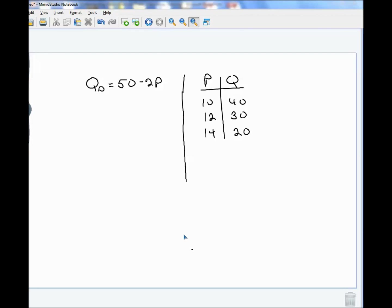So, given this demand equation, suppose you are asked to calculate arc elasticity where P is 10 and P is 15. So the formula for arc elasticity is Q2 minus Q1 over Q2 plus Q1 all over P2 minus P1 over P2 plus P1.